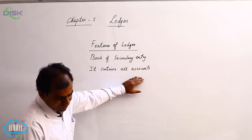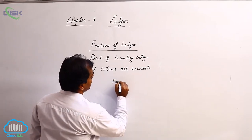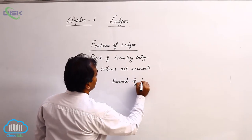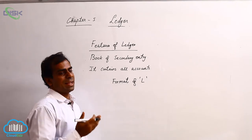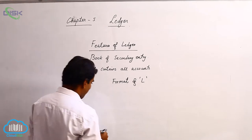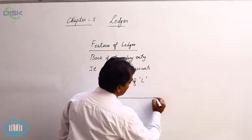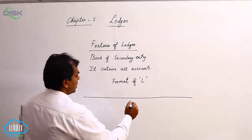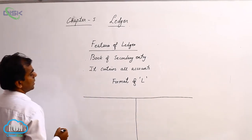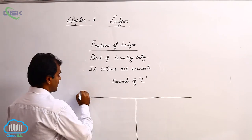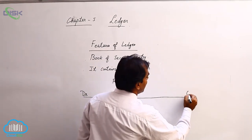Now let us discuss the format of the ledger. We have already discussed what an account is and how it looks in previous chapters, but let us recap. You have a ledger — the format is something like this: you have a page divided into two equal halves.